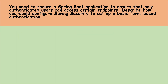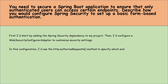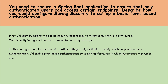You need to secure a Spring Boot application to ensure that only authenticated users can access certain endpoints. Describe how you would configure Spring Security to set up basic form-based authentication. First, I would start by adding the Spring Security dependency to my project. I would configure a WebSecurityConfigurerAdapter to customize security settings. In this configuration, I would use the http.authorizeRequests method to specify which endpoints require authentication. I would enable form-based authentication by using the http.formLogin method, which automatically provides a login form. Additionally, I would configure users and their roles in the configure method, either in memory or through a database.